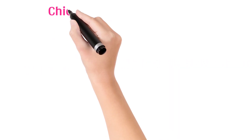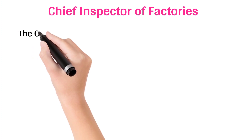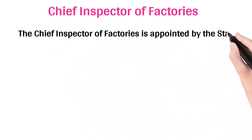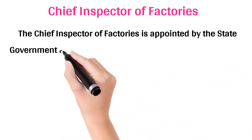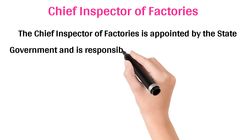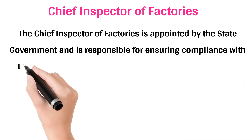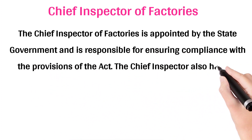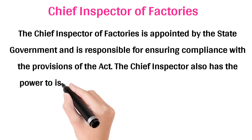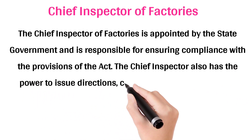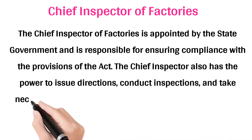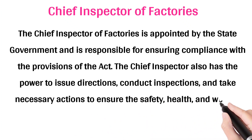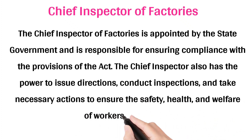Chief Inspector of Factories: The Chief Inspector of Factories is appointed by the state government and is responsible for ensuring compliance with the provisions of the Act. The Chief Inspector also has the power to issue directions, conduct inspections, and take necessary actions to ensure the safety, health, and welfare of workers in factories.